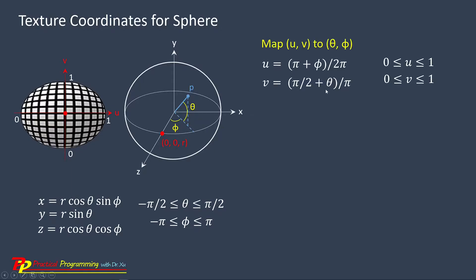We define U equal to pi plus phi divided by 2 pi. If phi changes from minus pi to pi, U will change from 0 to 1. We define V equal to half pi plus theta divided by pi. If theta changes from minus half pi to half pi, V will change from 0 to 1. Therefore, U and V are the texture coordinates we want.